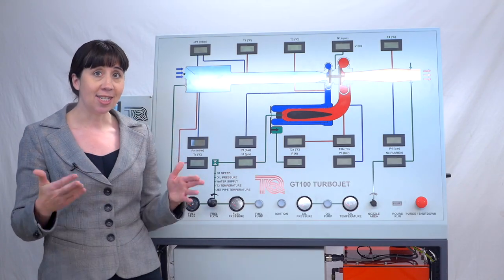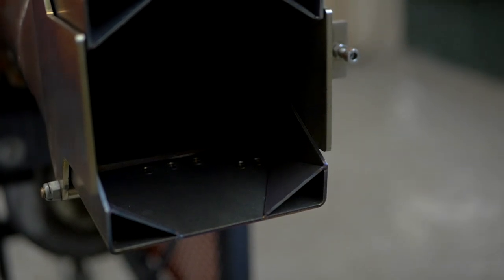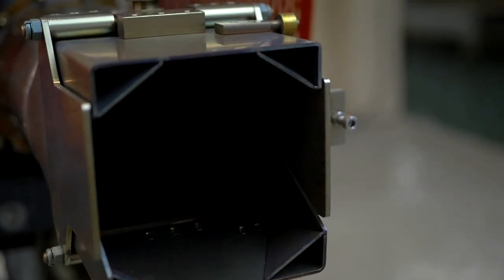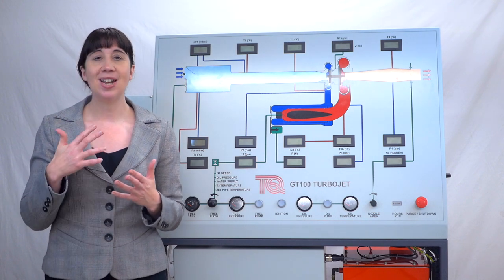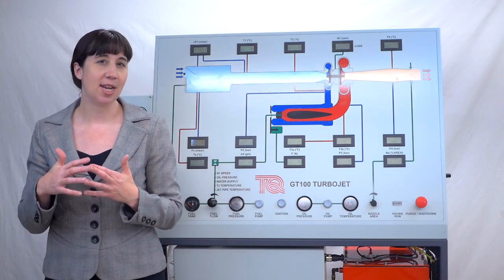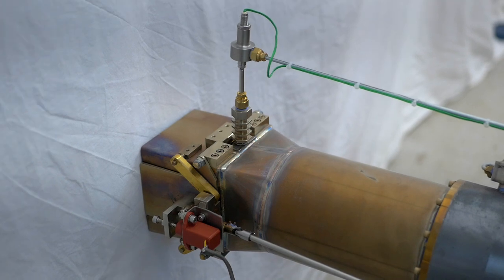You can see the nozzle itself has a rectangular cross section with variable upper and lower sections which allow you to adjust the area of the nozzle. The linear sensor you can see positioned here measures the nozzle upper and lower sections.